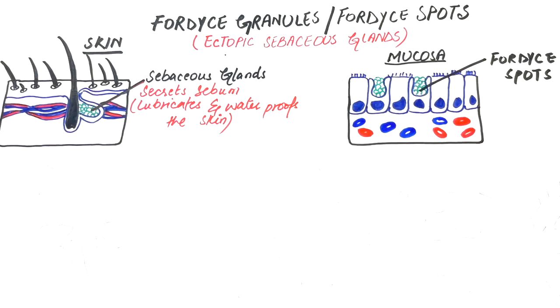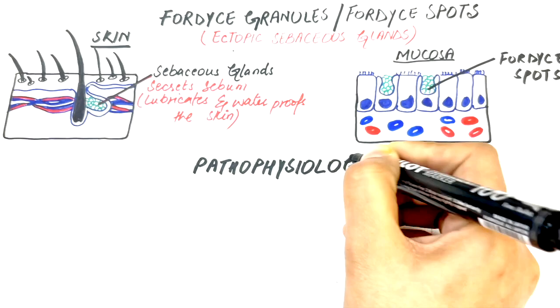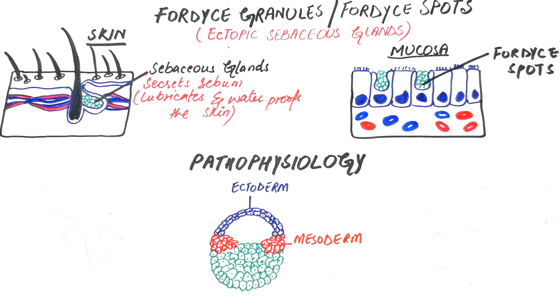Let's look at the pathophysiology of Fordyce granules. The epithelium of the skin and the oral mucosa shares the same embryonic origin, that is the ectodermal germ layer.